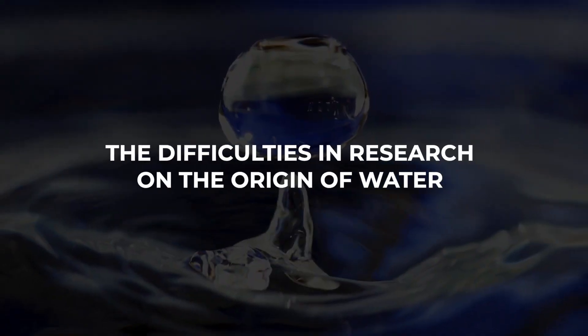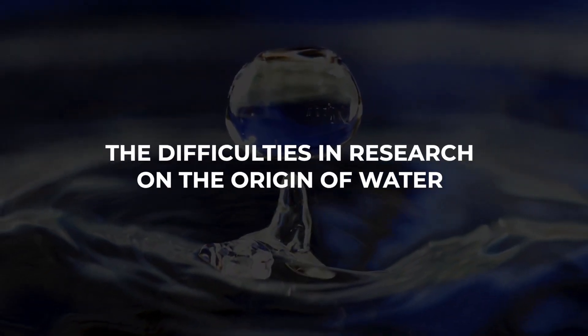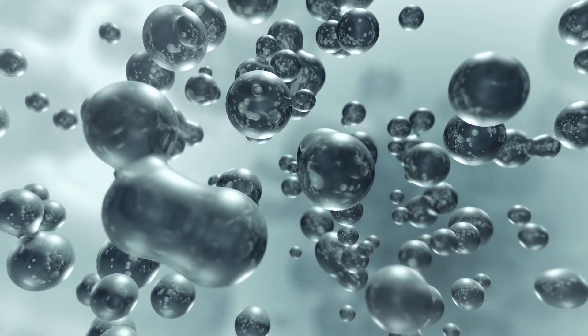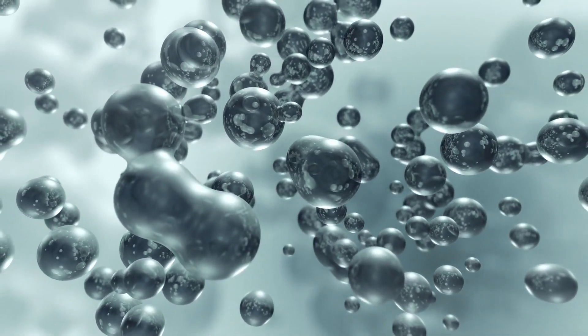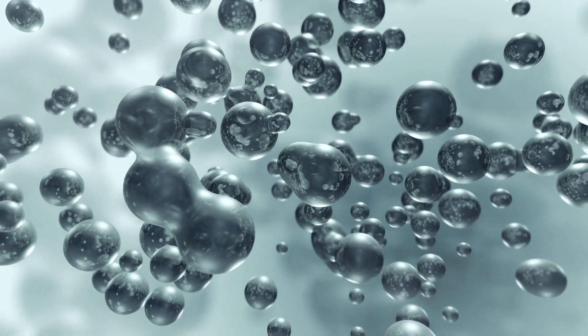The Difficulties in Research on the Origin of Water. In general, there are several approaches to how water could have originally found its way to Earth. There is no question that some form of water has always been present on the Earth. The decisive difference, and therefore the biggest problem in the theories, is the quantity.